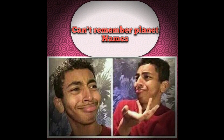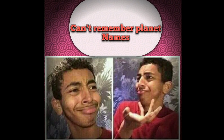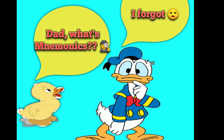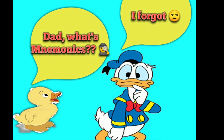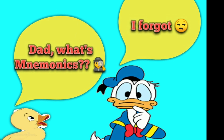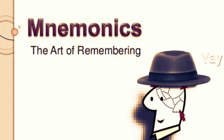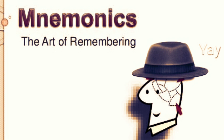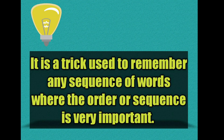Today we are going to learn how to remember planet names in sequence. Before we do that, we should know what is mnemonics. Believe me guys, it is just a tough word with simple meanings. This trick is called mnemonics. It is used to remember facts and is particularly useful when the order or sequence is important. We will use mnemonics to remember the planet names.